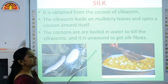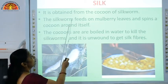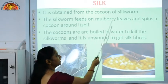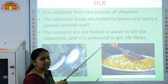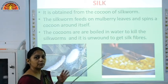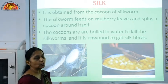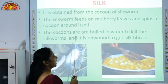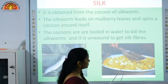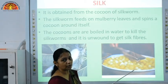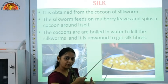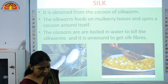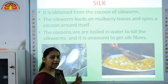The next fiber we will take up is silk. Silk is obtained from the cocoons of silkworms. The silkworm — the larva — feeds on mulberry leaves, and when it spins, it spins a cocoon around itself. The stage when the larva wraps itself in the cocoon is called pupa. This cocoon is boiled in water to kill the silkworms and then it is unwound to get silk fibers. The silk obtained is unwound from the cocoons to give silk fiber.